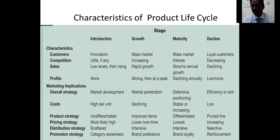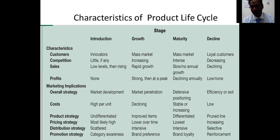Distribution strategy during introduction is scattered, covering only a few target customers. During growth, distribution becomes extensive, taking the product to many customers across different regions, states, or cities — an intensive distribution strategy. During maturity it remains intensive. During decline it becomes a very selective distribution strategy because only loyal customers continue to buy, so distribution is focused on regions where there are more loyal customers.